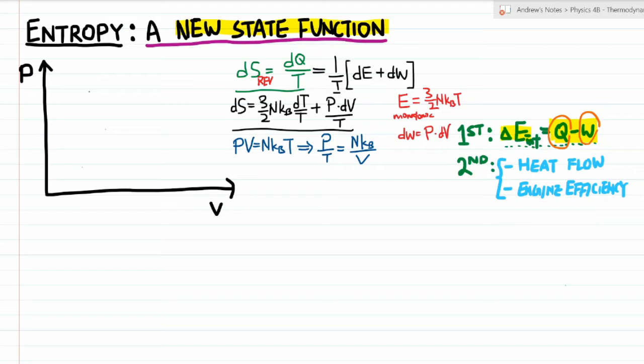In the last example we looked at free expansion, which is an example of a non-quasi-static process. Non-quasi-static irreversible processes have limited utility in this class because for us to be able to analyze something we kind of have to be able to represent it on a PV diagram, and if it's represented on a PV diagram then they have to be quasi-static. So what I want to do in this video is analyze an example of an irreversible cycle that is quasi-static, so we can represent it on a PV diagram and analyze in detail what happens.